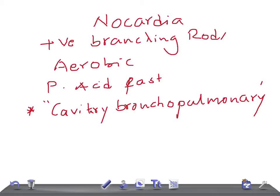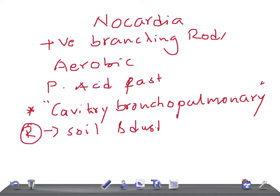So Nocardia is a gram positive, branching rods, aerobic, partially acid fast organism. The reservoir is soil and dust. Transmission is through airborne or traumatic implantation — if there is any trauma or accident, these organisms can enter and cause cavitary bronchopulmonary disease.